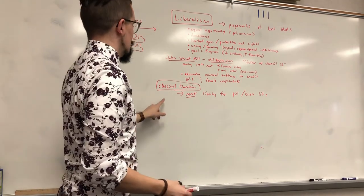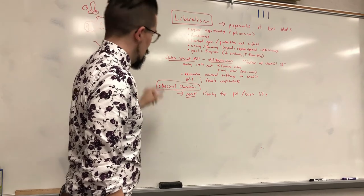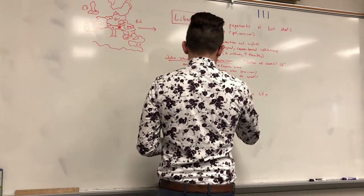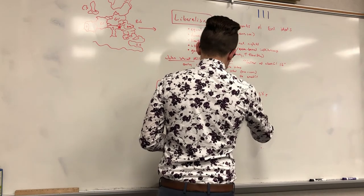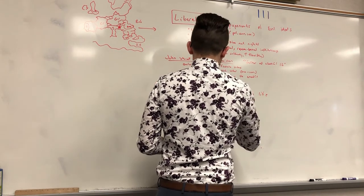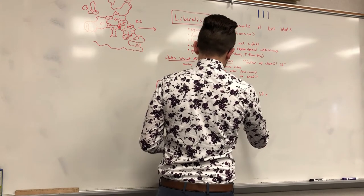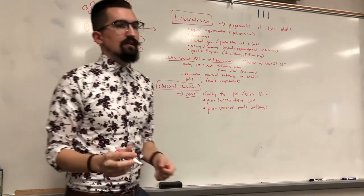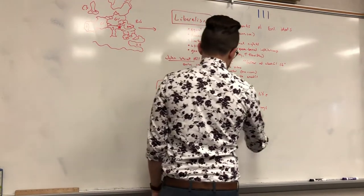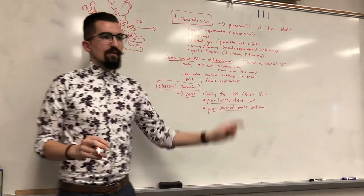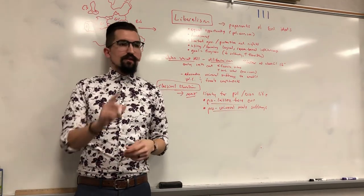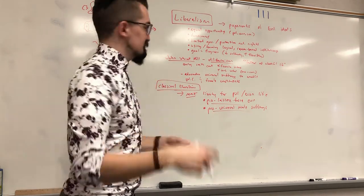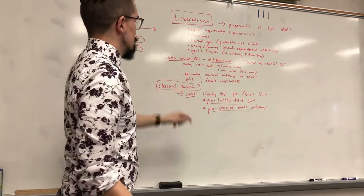Conservatives tend to favor the economic freedom part but oppose the social freedom part. Modern liberals like Democrats tend to support freedom of political and social expression but less so economic freedom. Classical liberals today are kind of like libertarians. Initially these guys are going to be pro laissez-faire economics and pro universal — or at least — male suffrage, because women won't get the vote until the early 1900s, nearly 100 years later. This is going to change after the 1870s.